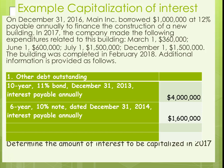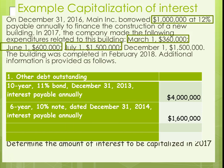Here's an example: a company borrowed a million dollars at 12%, and during the next year they had expenditures relating to a building — $360,000 in March, then expenditures on June 1st, July 1st, and a final payment on December 1st. The building was completed in February 2016. You also have to look at other loans outstanding: a $4 million loan and a $1.6 million loan at 11% and 10% interest.